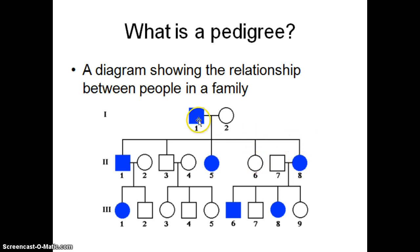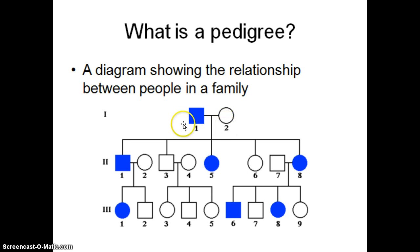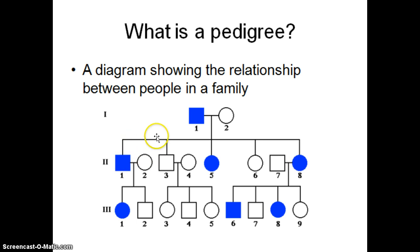This particular couple — generation one, number one and number two — have five children. Of those children, they have two boys and three girls. Don't worry about the shading quite yet, we'll talk about that in a second.